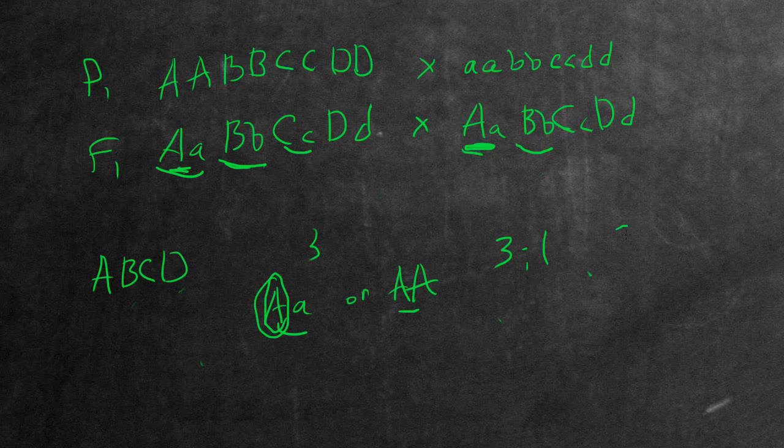So that means there's a three-fourths chance of expressing the dominant trait. And that's going to be among all of them. So that means you can do our little trick again and put this to the exponent of four.